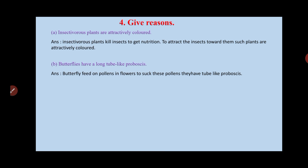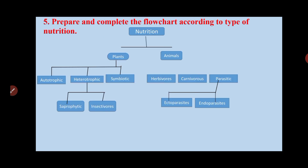The next reason: butterflies have a long tube-like proboscis because butterflies feed on pollen, which is present inside the flower. This is the main food of butterflies, so to suck that pollen they have a tube-like proboscis.